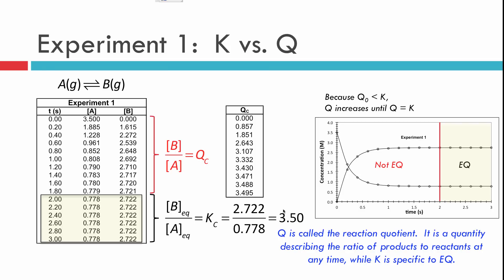What we've just found out is, when Q naught, the initial Q is less than K, the reaction will move in such a way so that Q increases. And it will stop moving in one direction over the other when Q is equal to K.